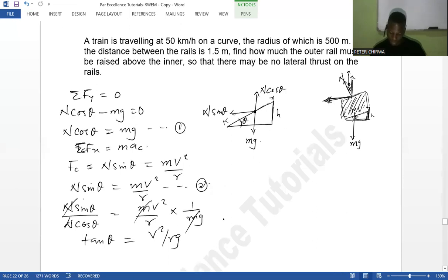So we can get the angle. Theta is going to be the tan inverse of v squared. V is 50 kilometers per hour, so we convert this 50 kilometers per hour to meters per second. I believe you know how to convert. We are going to have 13.89 meters per second. And then the radius is 500 meters, and g is 9.8. So theta here when we punch it in...